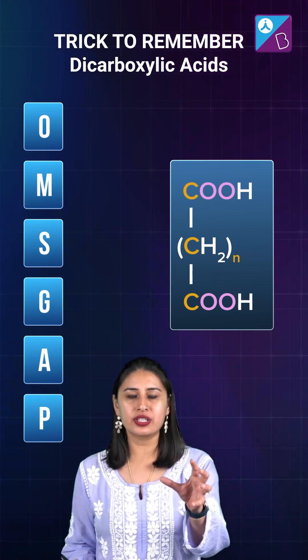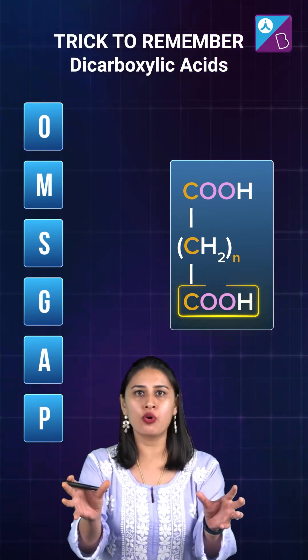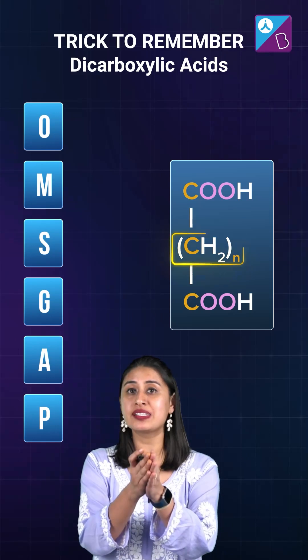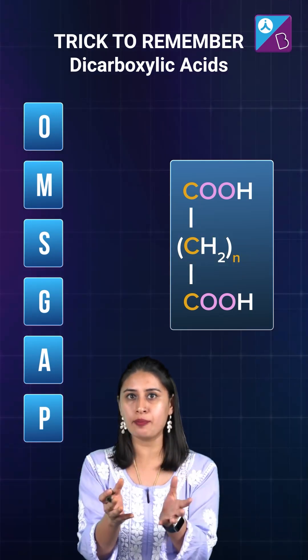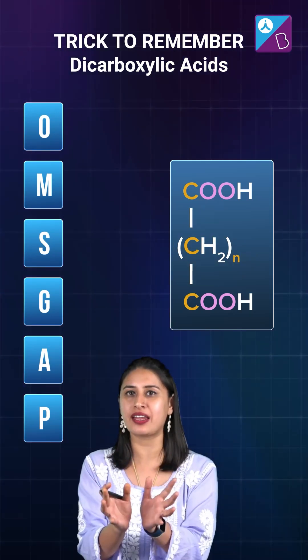Imagine it this way: you have COOH–(CH₂)ₙ–COOH terminals, where CH₂ is in the subscript, and N can vary.